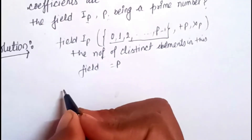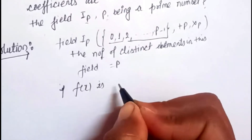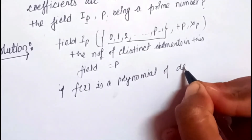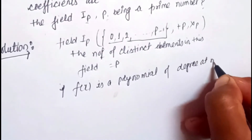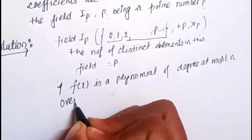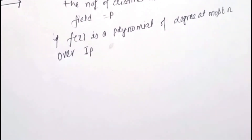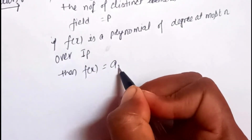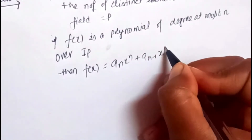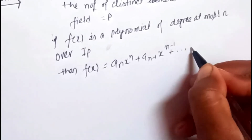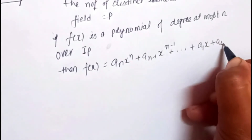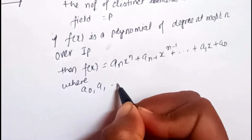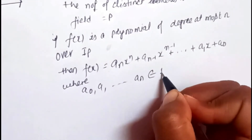If f(x) is a polynomial of degree at most n over this field ℤ_p, then the polynomial will be of the form f(x) = aₙxⁿ + aₙ₋₁xⁿ⁻¹ + ... + a₁x + a₀, where a₀, a₁, ..., aₙ belong to the field ℤ_p.